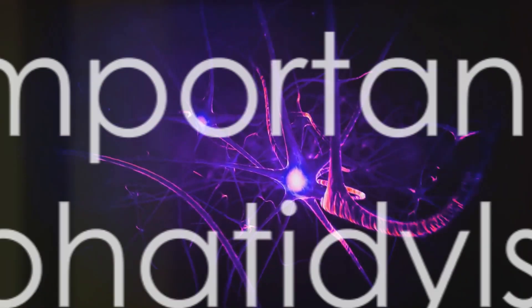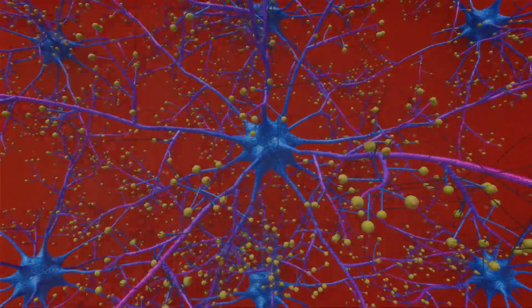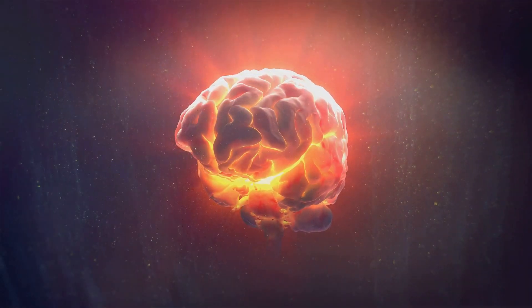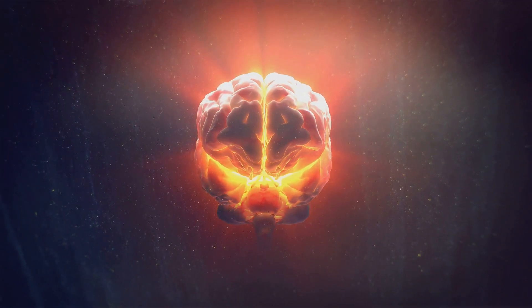Now, why is this important? Phosphatidylserine is abundant in our brains, working tirelessly to maintain cellular function. It's like the brain's personal assistant ensuring everything runs smoothly.